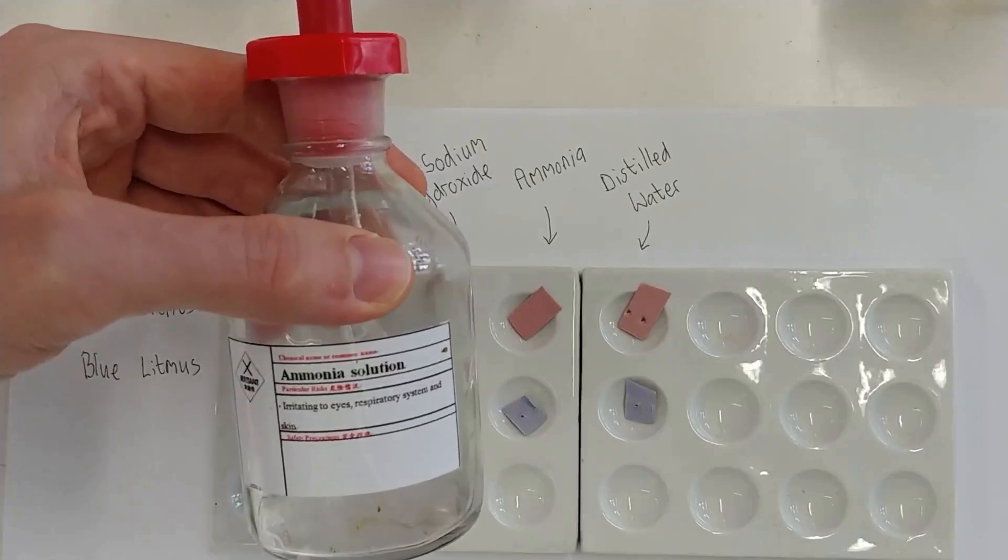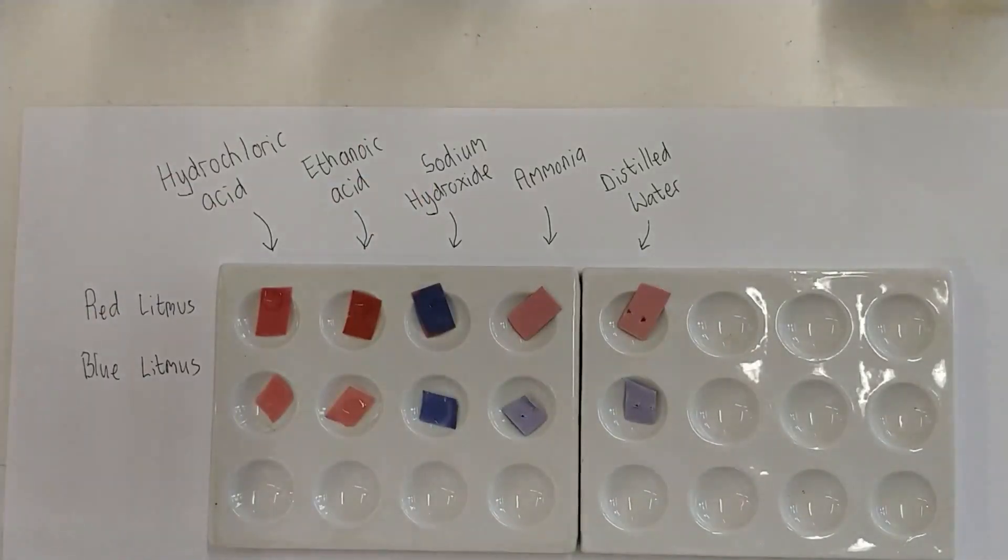Next, we take ammonia, which is another alkaline solution. And we drop one drop onto the red litmus, and it changes blue, and one drop onto the blue litmus, and it doesn't change.